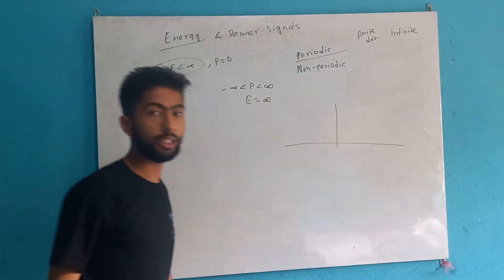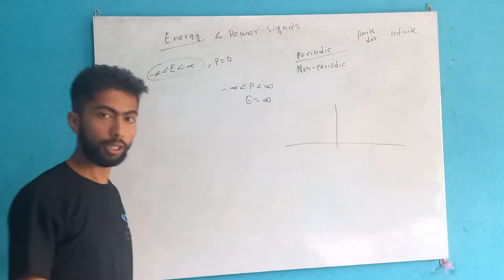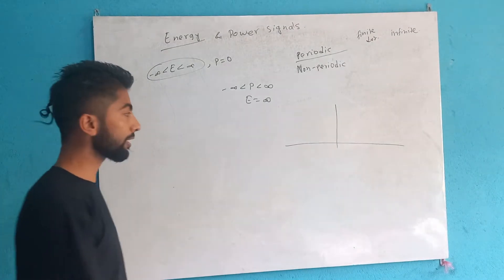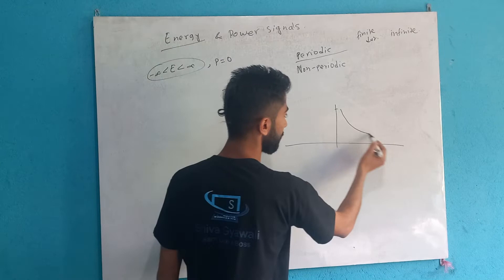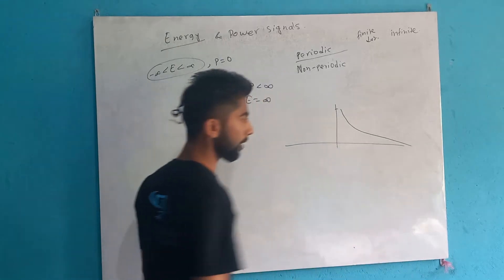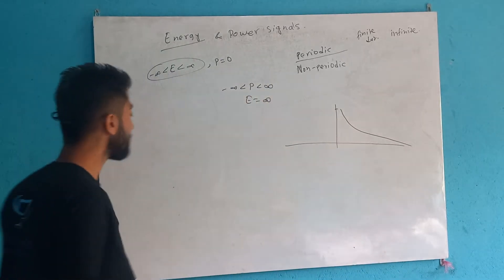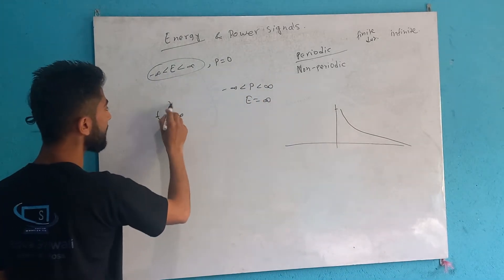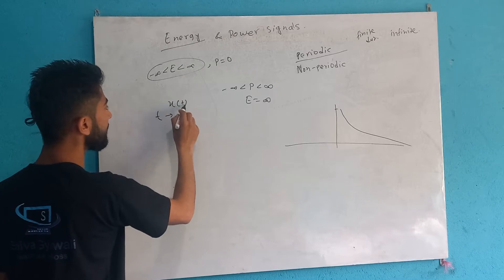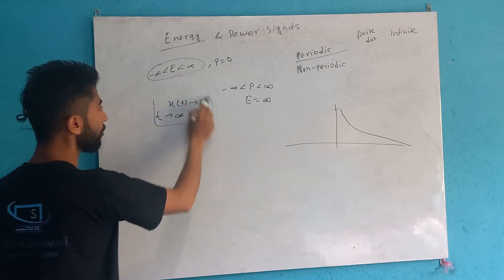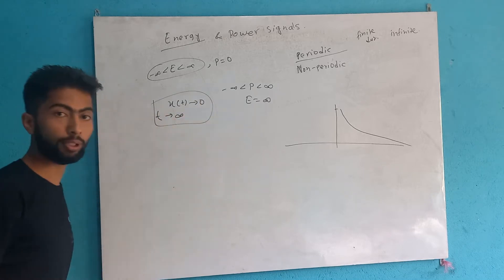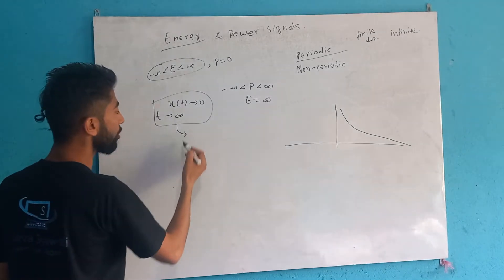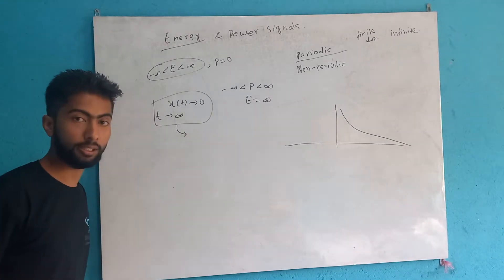This is a converging signal, a non-theoretic signal. We will consider this type of signal: as t tends to infinity, x(t) tends to zero. It is a converging signal, so this signal is an energy signal.